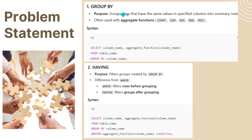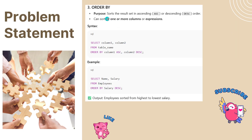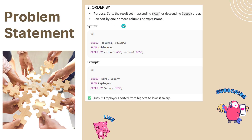Group By groups rows that have the same values in specified columns into summary rows, often used with aggregate functions like COUNT, SUM, AVG, MAX, and MIN. Having filters groups created by Group By — the difference from WHERE is that WHERE filters rows before grouping, while Having filters groups after grouping. Order By sorts the result set in ascending or descending order across one or more columns or expressions. Syntax screenshots are provided.